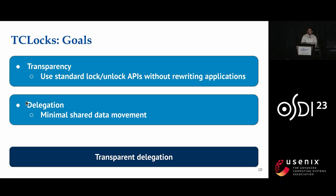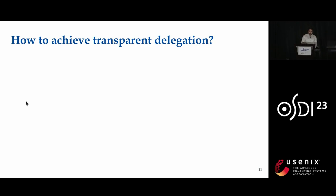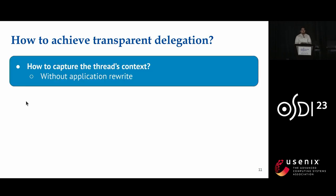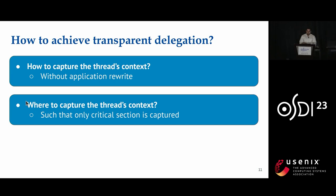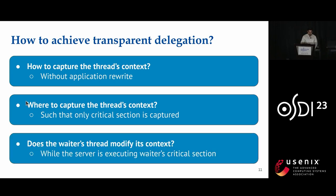This leads us to the goals of TCLocks, which is to provide transparent delegation. We provide transparency by giving developers the standard lock and unlock API, while also providing minimal shared data movement using delegation-style lock design. To achieve transparent delegation, we need to answer three key questions: First, how to capture the thread context so that we don't require any application modification. Second, where to capture this thread context such that only the critical section is captured. Third, does the waiter modify its context while the server is executing the waiter's request? This is important because the context is shared between the waiter and server threads, and modification could lead to corruption.